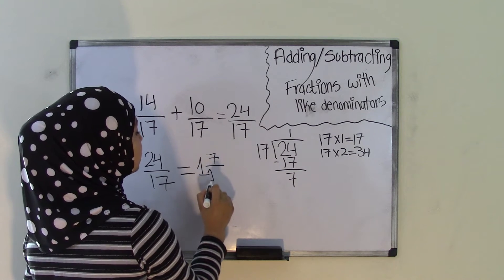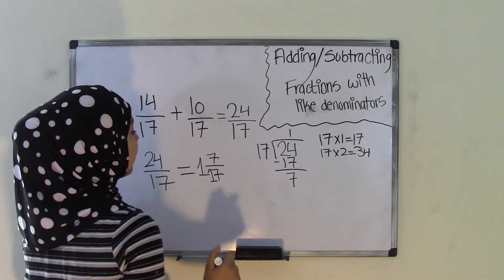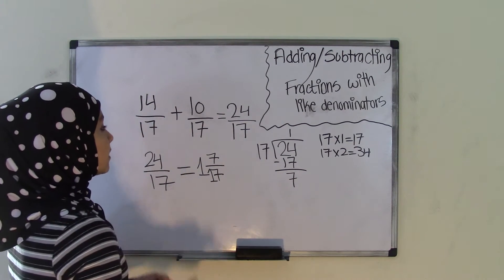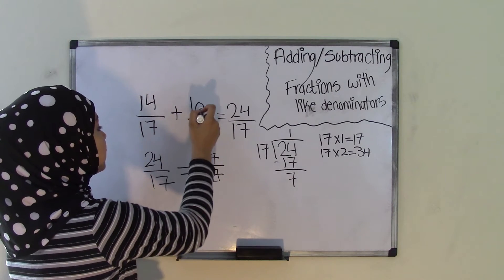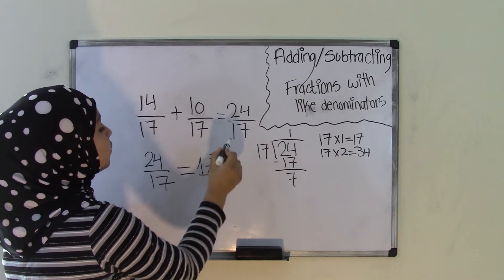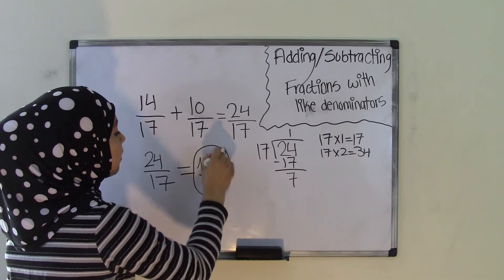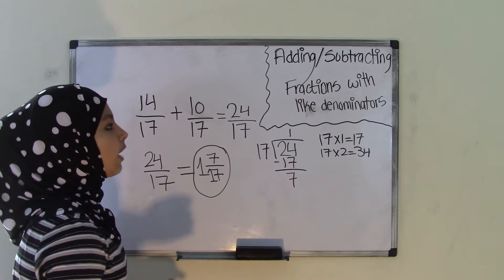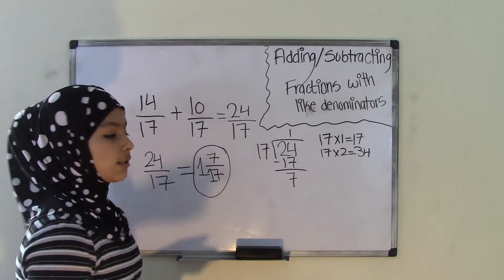And your divisor is going to become your denominator. So the divisor, remember, is just the number that you divide by. That means your sum for 14 over 17 plus 10 over 17 equals 24 over 17 or 1 and 7 over 17. That's how you add fractions with like denominators.